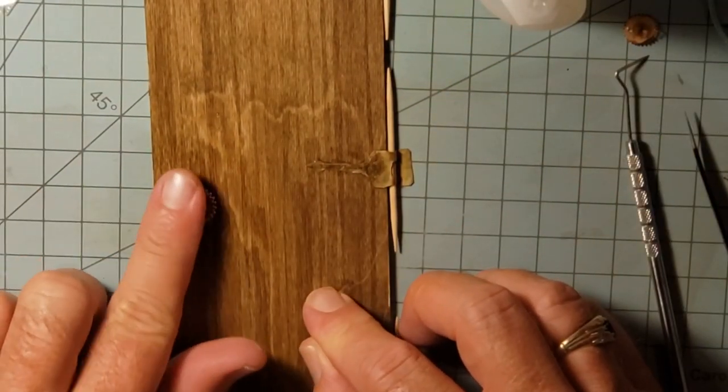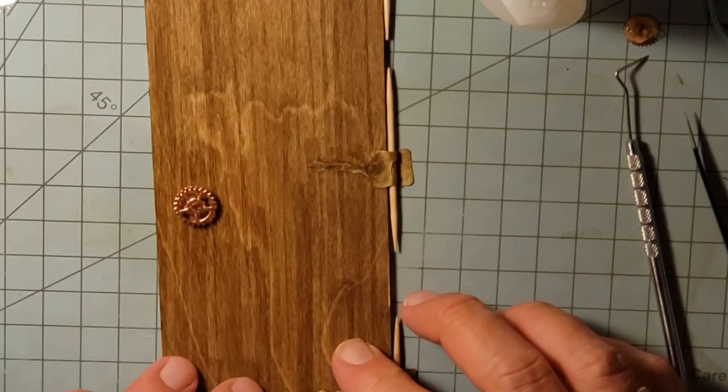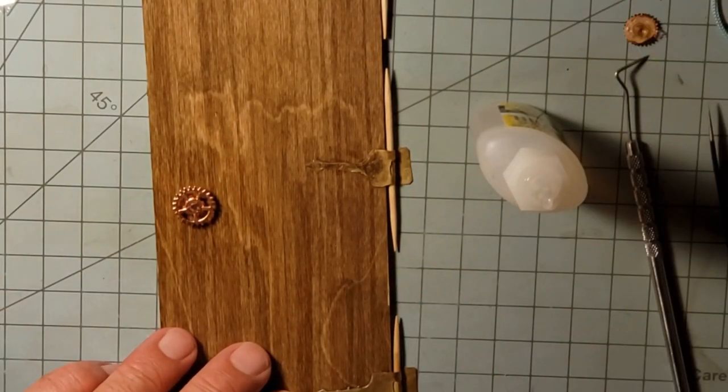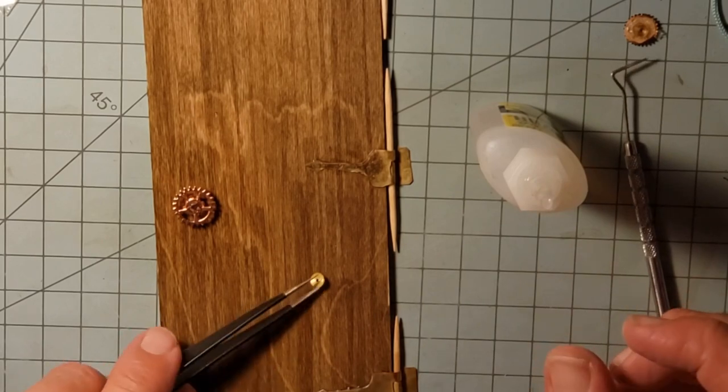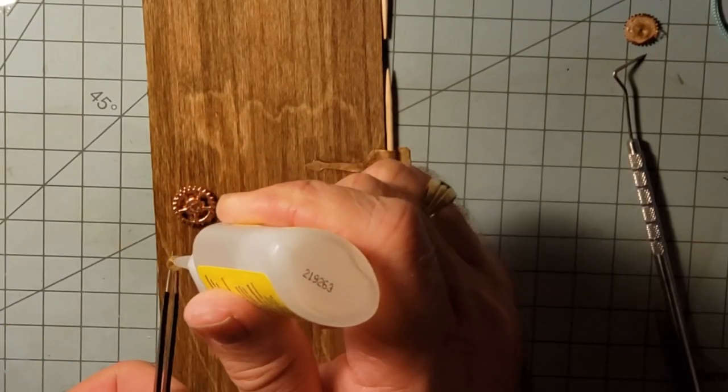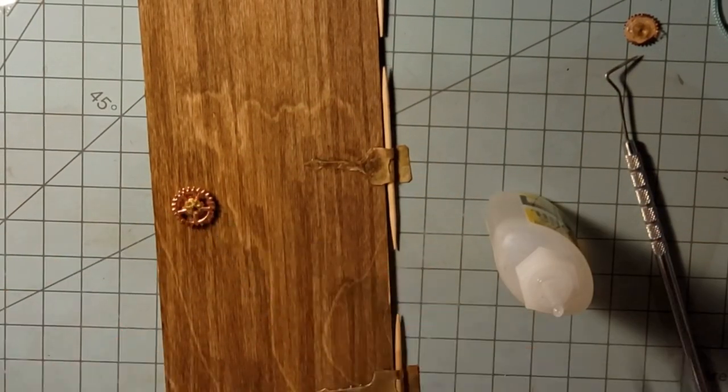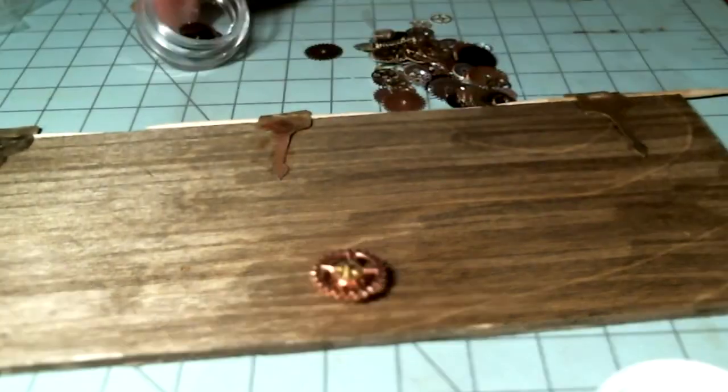Just get rid of that. Clean it off a little bit, and I'm just going to basically make another one, attach it to it. Except we're going to go about it a different way. Put the post on there first, and then put the other two pieces on.